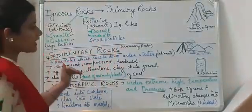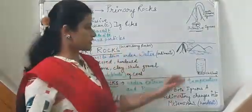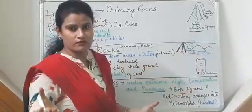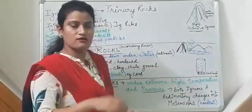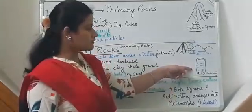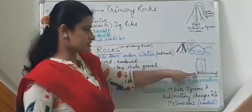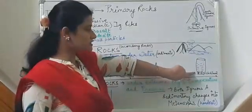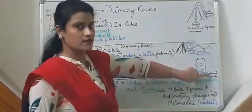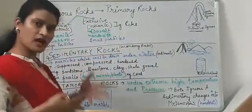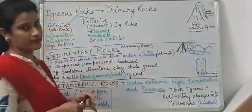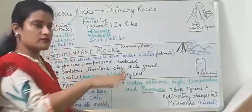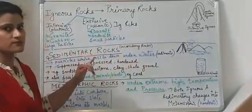Think of a situation where you pour muddy river water into a glass. After a few minutes you see small sediments settled at the base of the glass and clean water visible at the top. Those things settled at the base are known as sediments. Similarly, small particles of rocks flowing with the river settle down at the base — on the river bed — and water flows at the top.